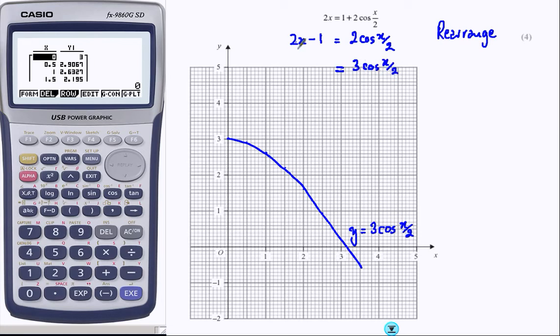3 over 2 times 2, and 3 over 2 times this. 3 over 2 times 2x, and 3 over 2 times 1.